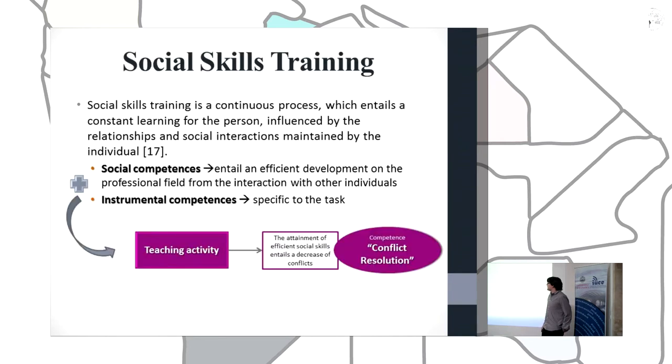Social skills training is a continuous process which entails constant learning for the person, influenced by the relationship and social interactions maintained by the individual. This concept makes reference to the social behaviour and also includes social competences that entail an efficient development on the professional field from the interaction with other individuals, and instrumental competences that are specific to the task. These both sets of competences are involved in the teaching activity. Also, the attainment of efficient social skills entails a decrease of conflicts, which therefore produce an increase on the competence conflict resolution.